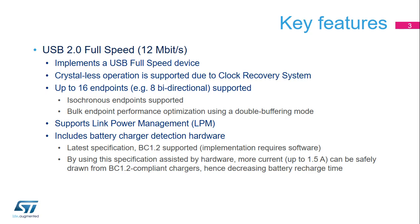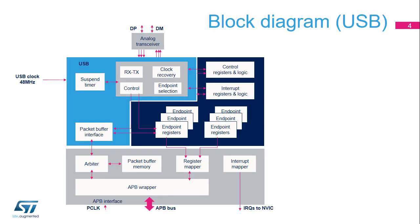Bulk endpoints are able to use a double buffering mode offering higher performance. Inbuilt support for link power management adds enhanced power modes on top of the USB 2.0 specification. Battery charger detection allows for increased current to be drawn from BCD 1.2 compliant chargers, allowing up to 1.5 amp charging. The block diagram of the USB Full-Speed Device Controller shows the various building blocks inside along with its analog transceiver.